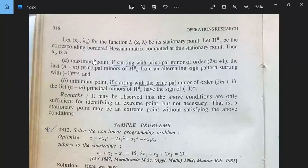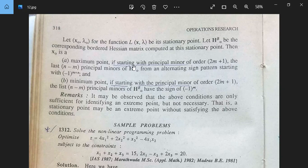If starting with principal minor of order 2M plus 1, M number of constants, order 2M plus 1 principal minor, the last n minus m principal minors of H^b_0 form an alternating sign pattern starting with minus 1 to the power M plus 1. The last n minus m principal minors of H^b_0 have the sign of minus 1 to the power M.